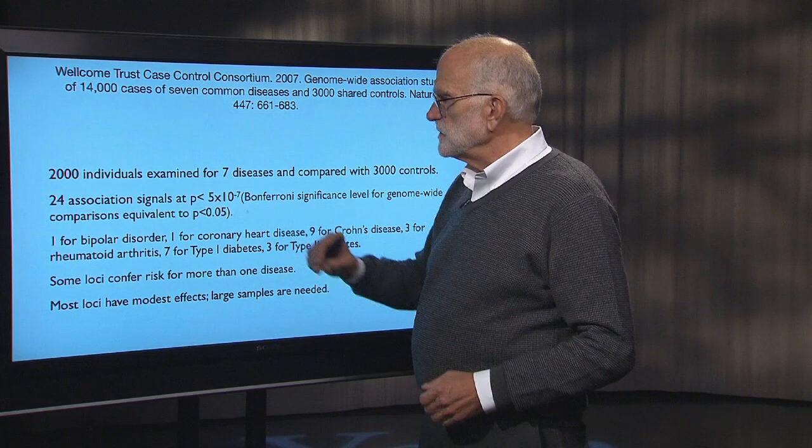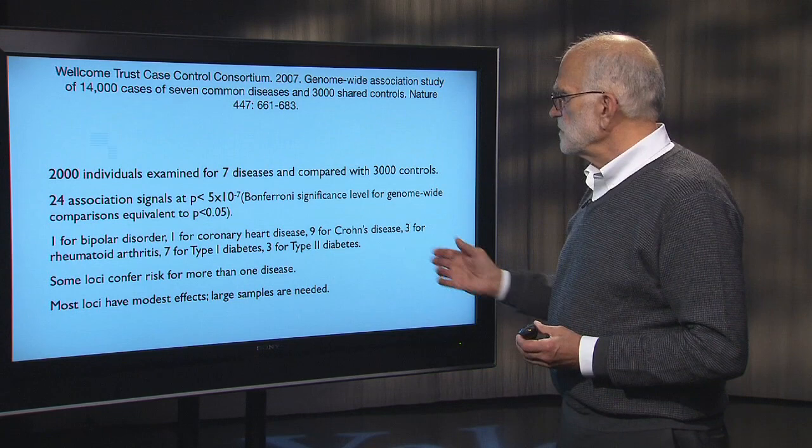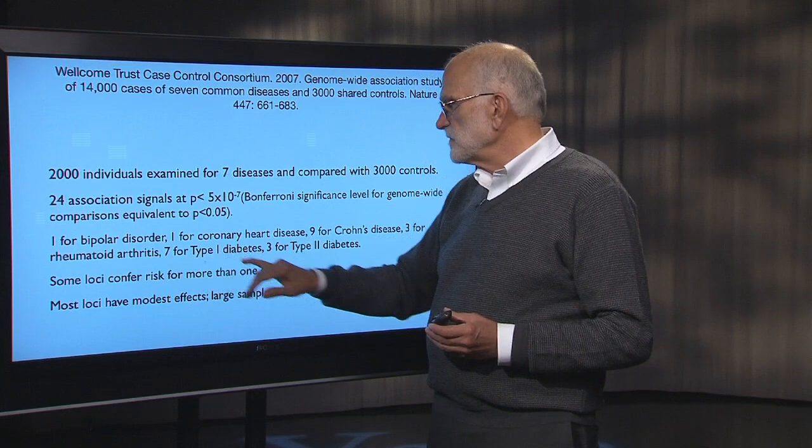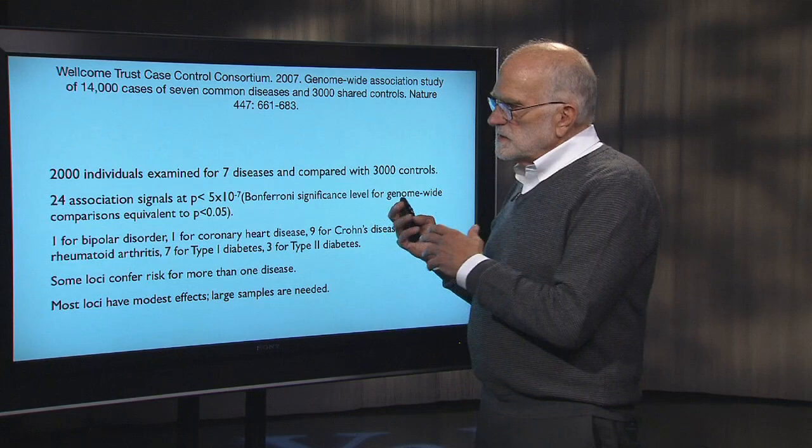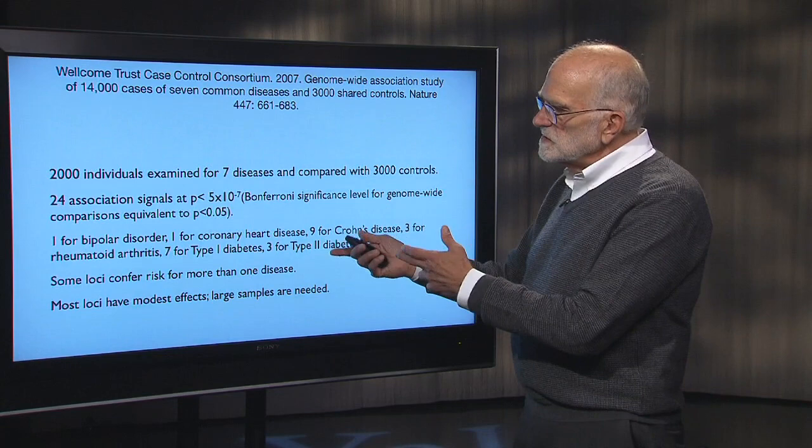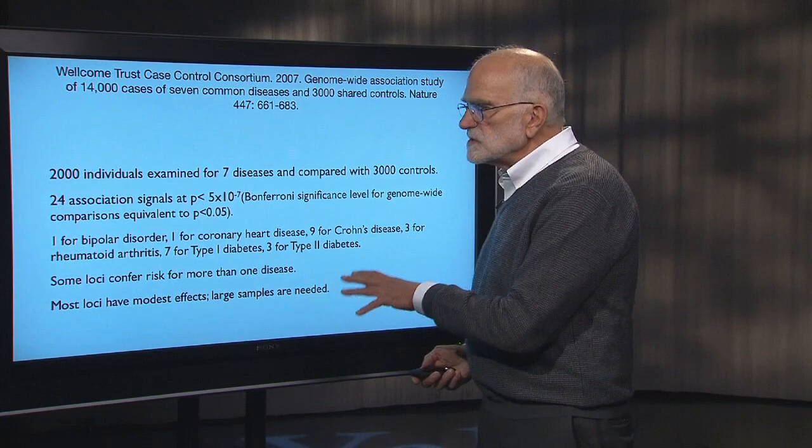They found one signal for bipolar disorder, one for coronary heart disease, nine for Crohn's disease (an inflammatory bowel syndrome), three for rheumatoid arthritis, seven for type 1 diabetes, and three for type 2 diabetes. These were discoveries of new genetic effects on the risk of these diseases. Some effects increase the risk of more than one disease, and most effects are pretty modest — the effect sizes are small.